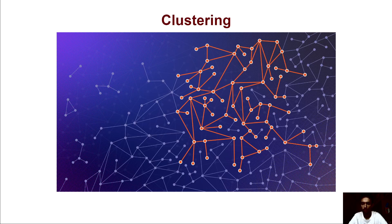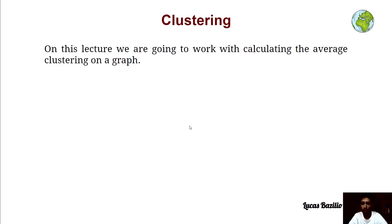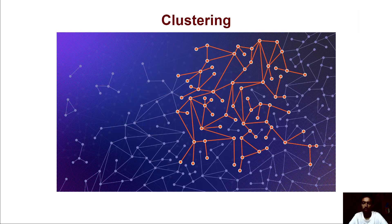Hey everyone. In this lecture, we are going to work on calculating the average clustering on a graph. Inside the graph, we can have two types of clustering: local clustering and global clustering. These two are defined in different ways.